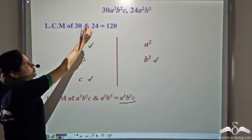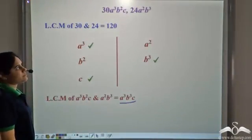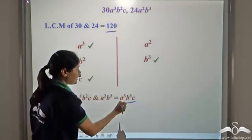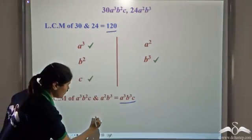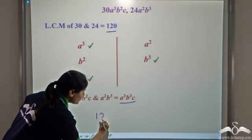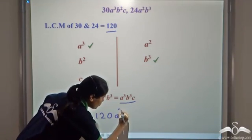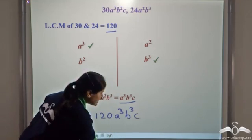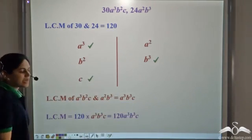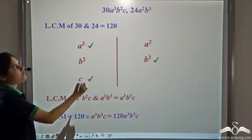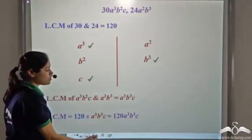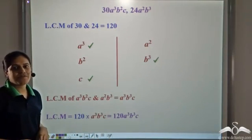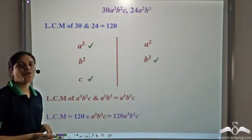So what will be the LCM of these two terms? It is 120 × a³b³c, which gives 120a³b³c as the LCM of these two terms. This is how we calculate the LCM of two or more terms.